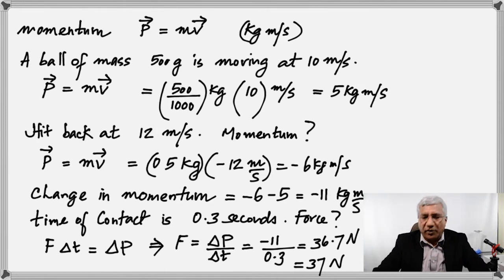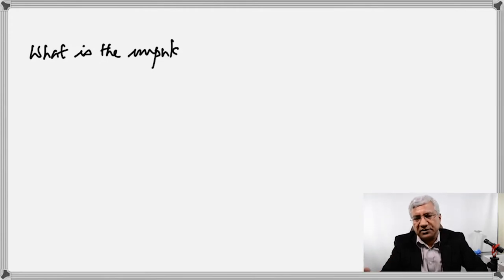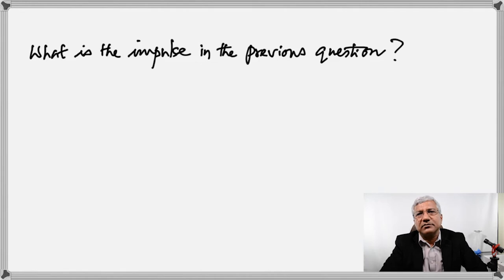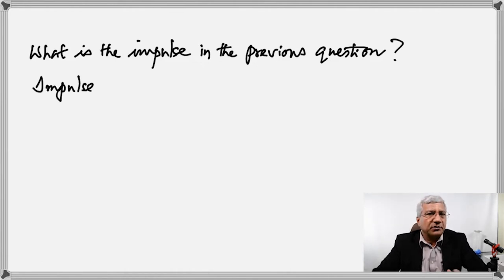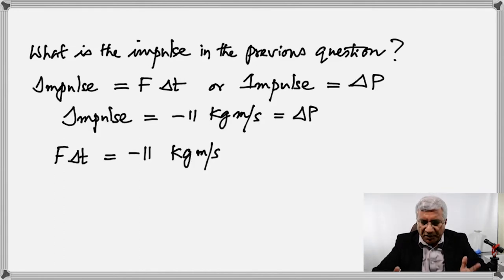Let's move to the next one. I'm connecting it to the previous question. Impulse can be calculated in two ways: it's either the product of force and time or the change in momentum. So what's the impulse in the previous question? It is the change in momentum — wasn't it negative 11 kilogram meter per second? That is the impulse: negative 11 kilogram meter per second.